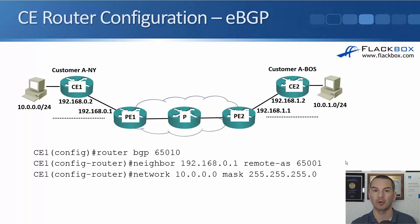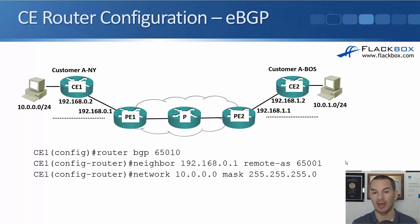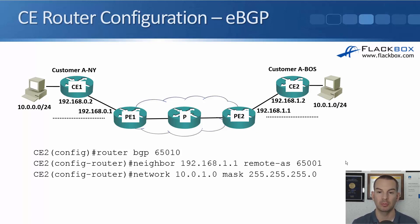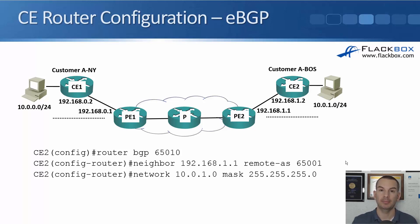CE1 forms a BGP relationship with PE1. The provider configures the PE1 side, and CE1 uses eBGP to advertise its internal networks to PE1. PE1 carries them via iBGP over to PE2. We also need eBGP set up between PE2 and CE2. On CE2: router bgp 65010, neighbor 192.168.1.1 remote-as 65001 for the eBGP relationship with PE2, and network 10.0.1.0 mask 255.255.255.0 to advertise that subnet to PE2.